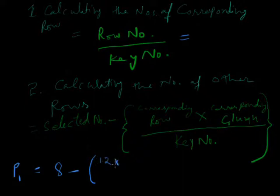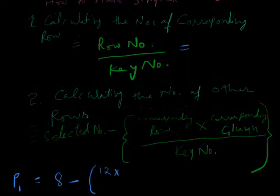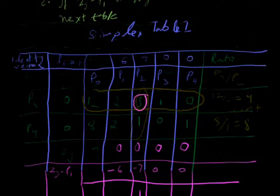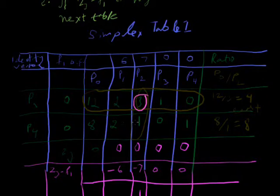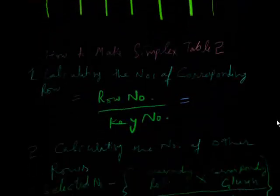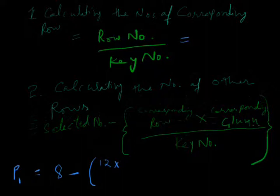And corresponding column. We see in simplex table 1, this is a 1. In the front of 8 is a 1. This is a corresponding column value. This is a 1 and key number is 3.